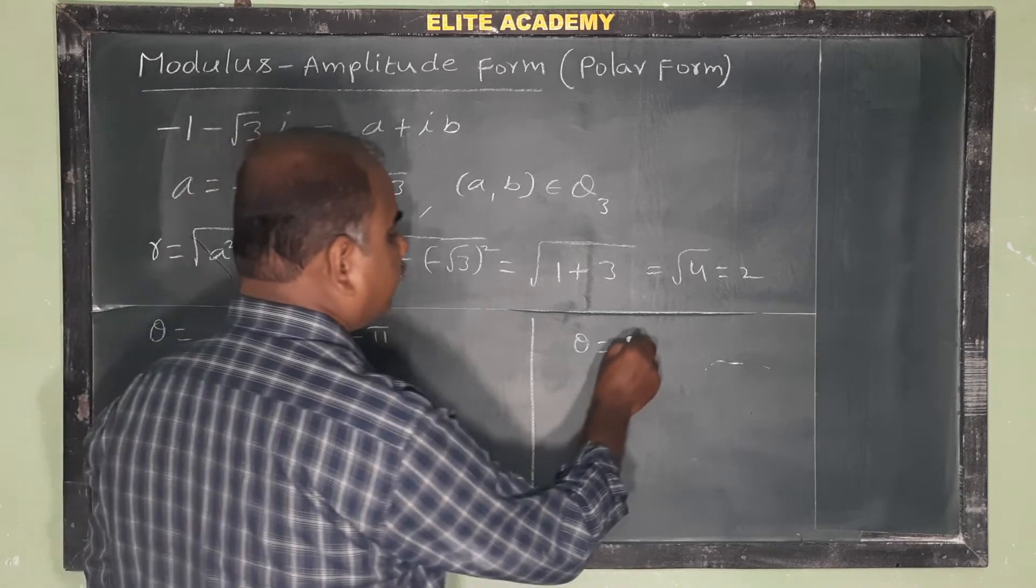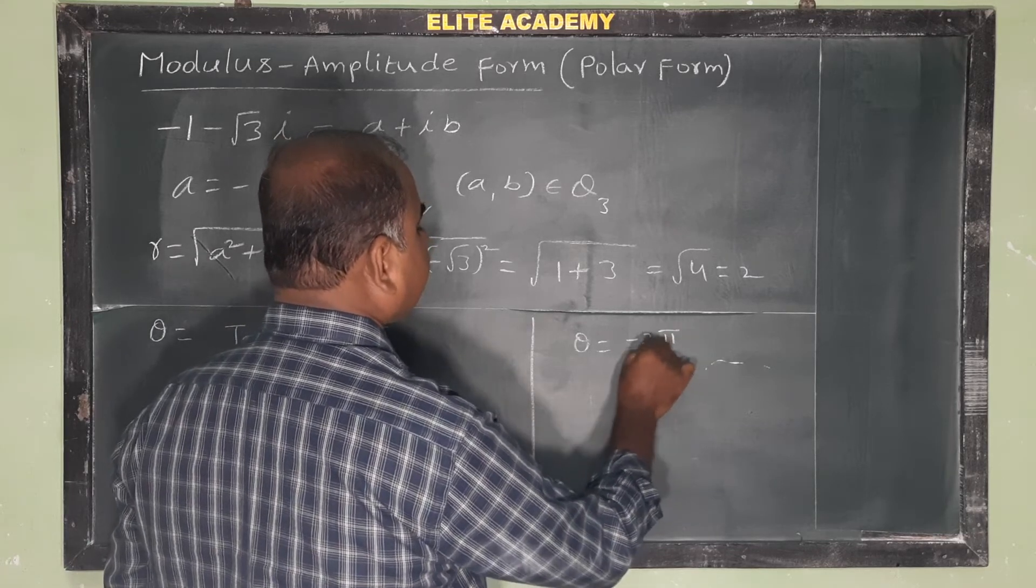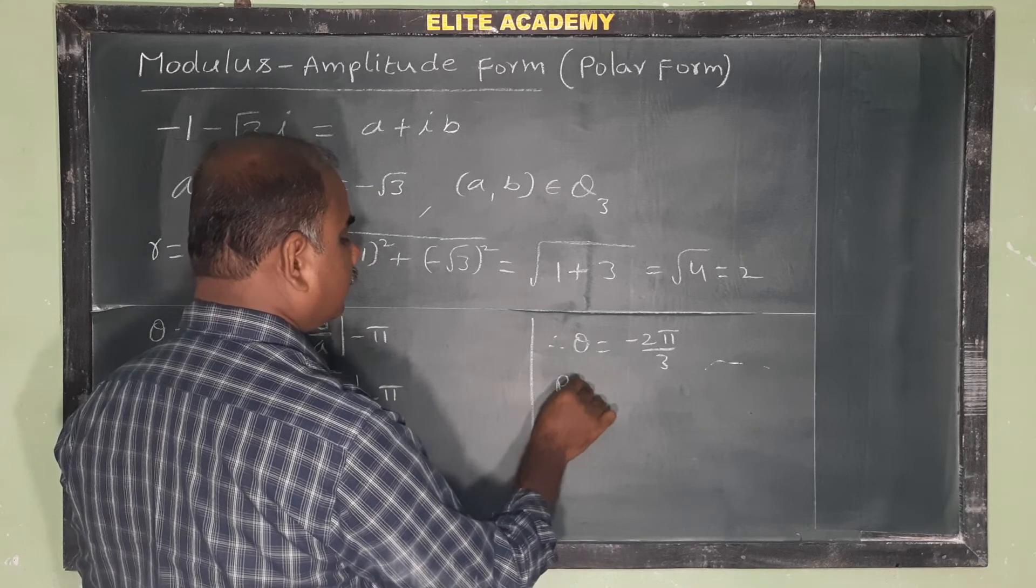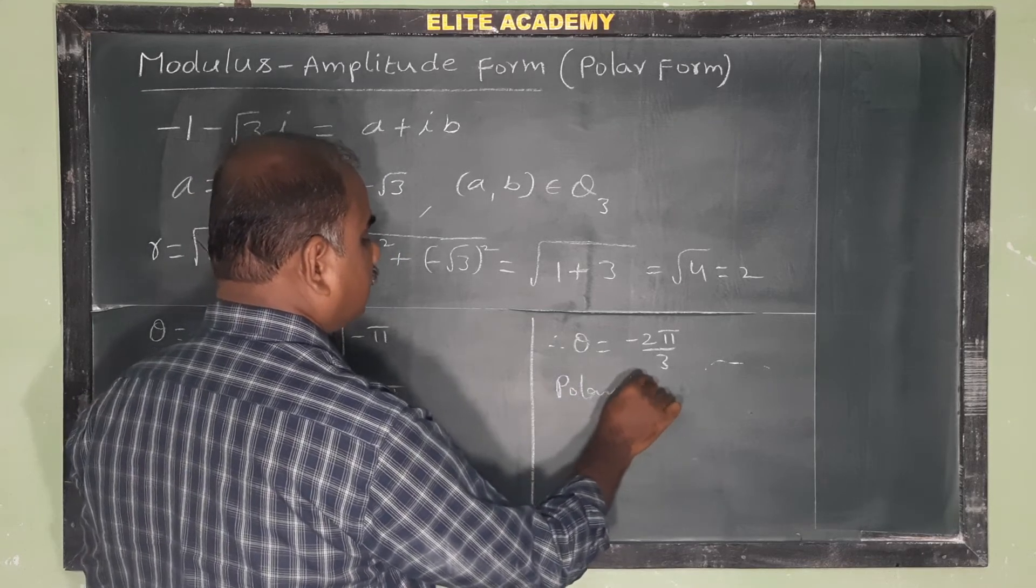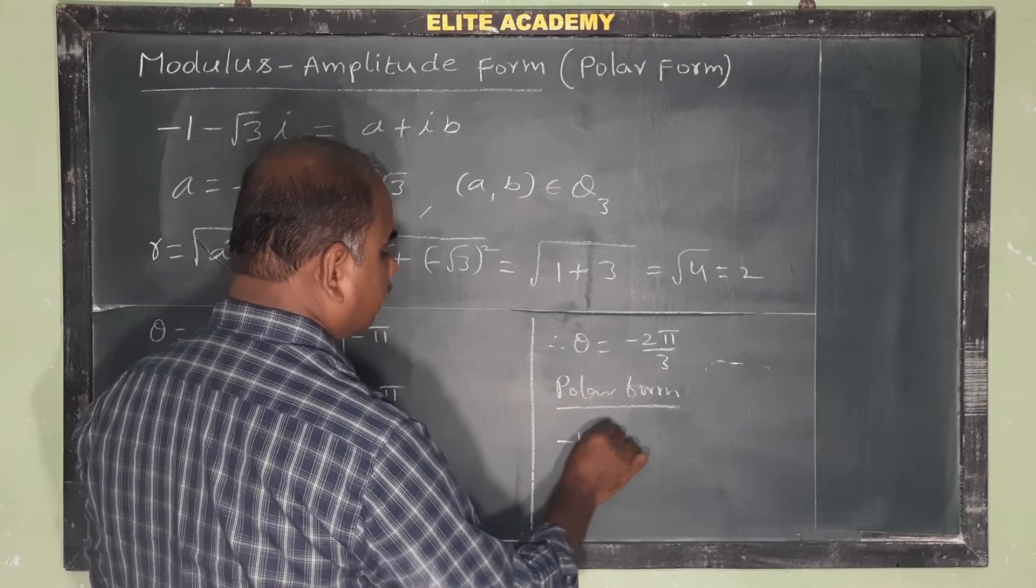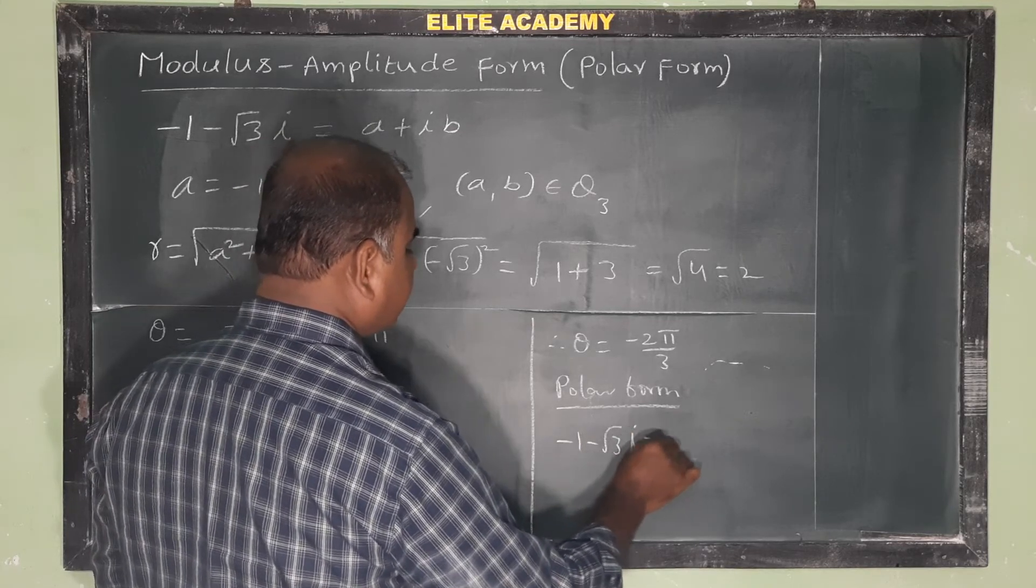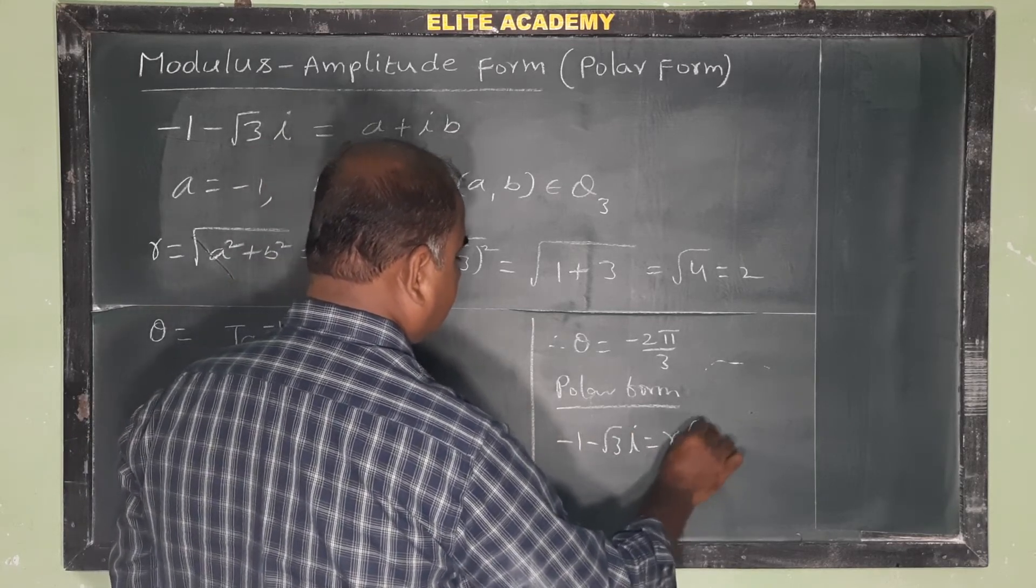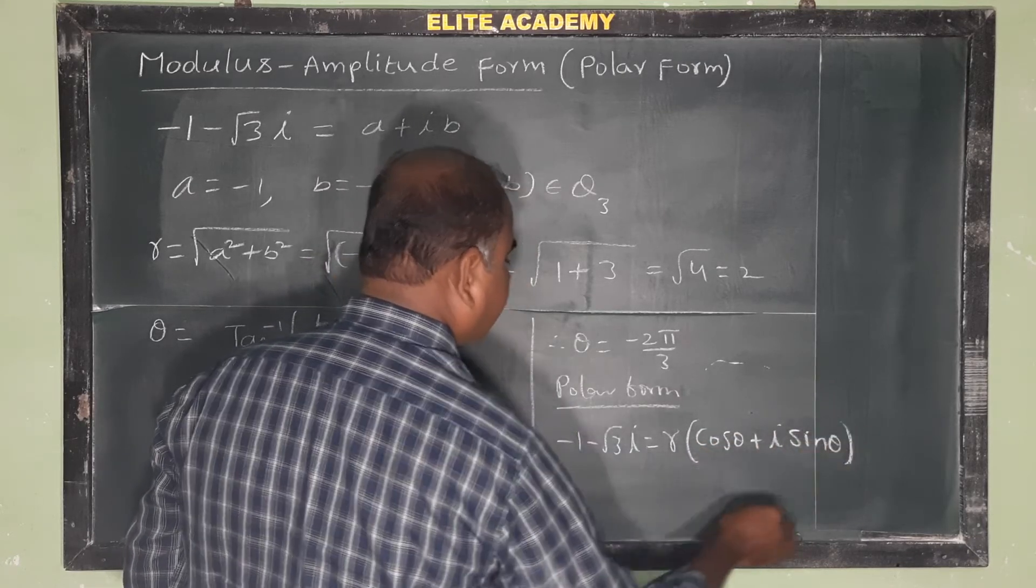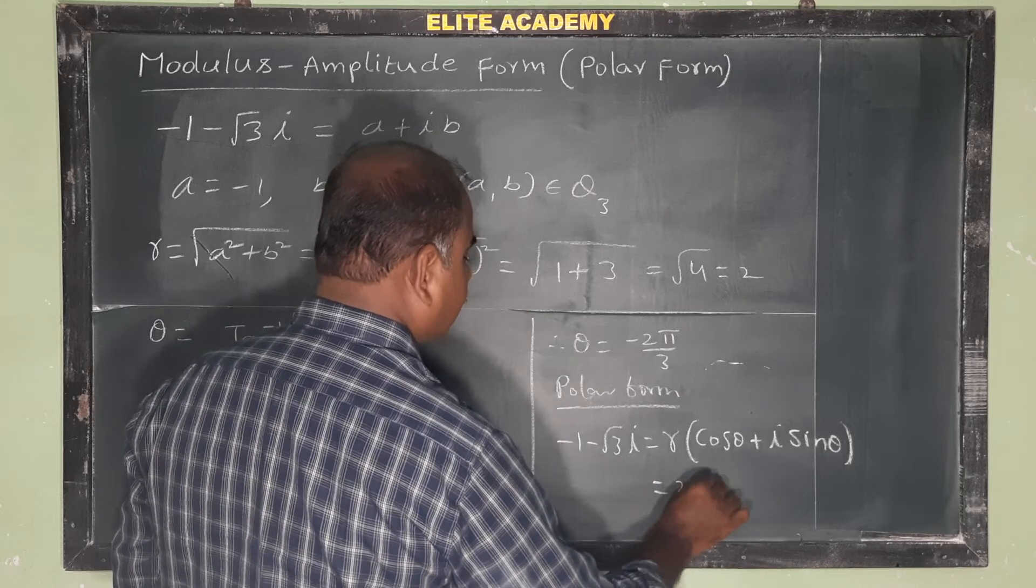This is the amplitude. Therefore, the polar form: -1 - √3i = r(cos θ + i sin θ) = 2...